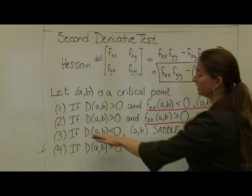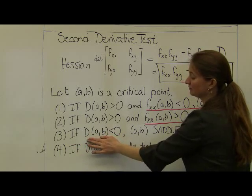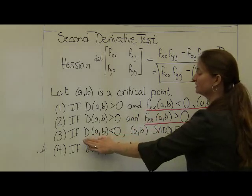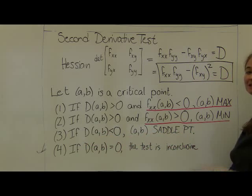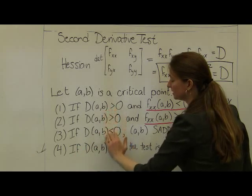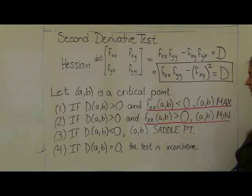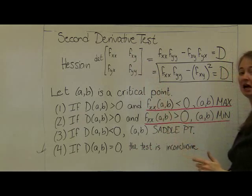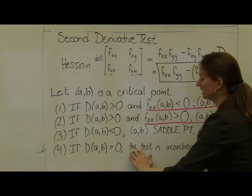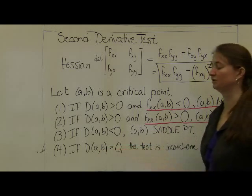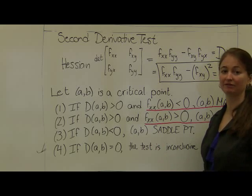If the discriminant is negative, we don't need any further checks — we immediately know that (a, b) is a saddle point. Finally, if the discriminant is exactly zero, the test is inconclusive. This corresponds to the Hessian matrix being non-invertible. In that case, the tool we have is to look at a graphical display of the function.